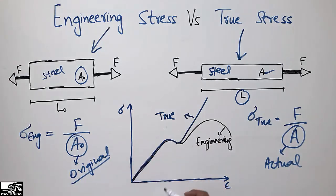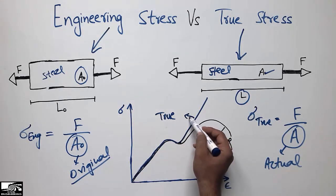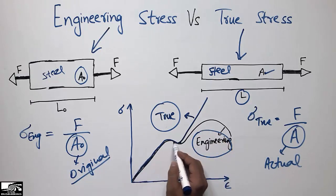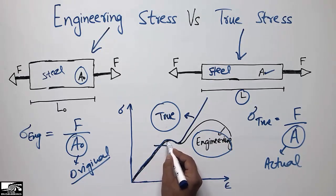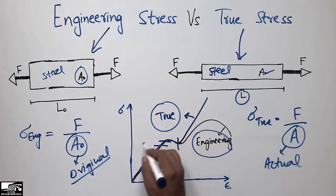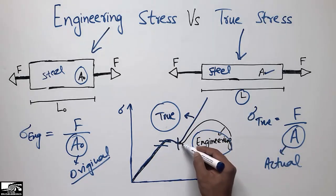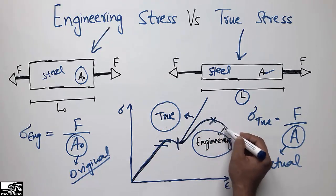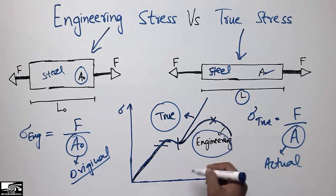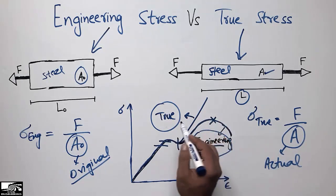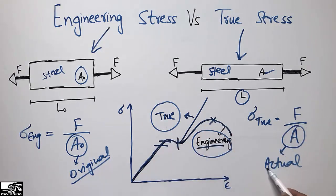Another difference is seen in the stress-strain graph. The blue curve shows true stress and the black curve shows engineering stress. Both show the same trend up to the proportional limit, elastic limit, and yield point. After the yield limit, engineering stress rises to the ultimate limit and then comes down to failure. True stress shows different behavior because we use the actual reduced area rather than the original area.